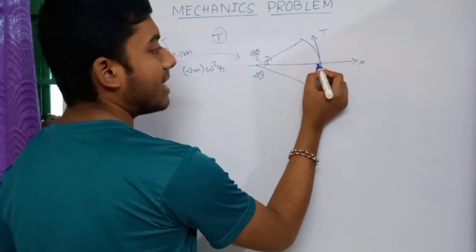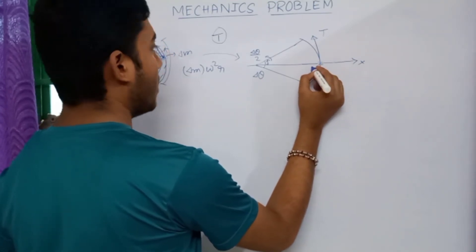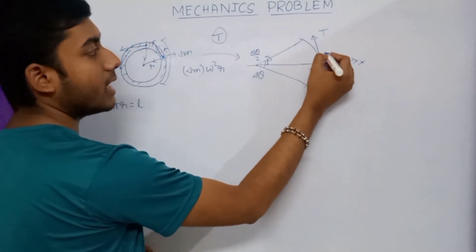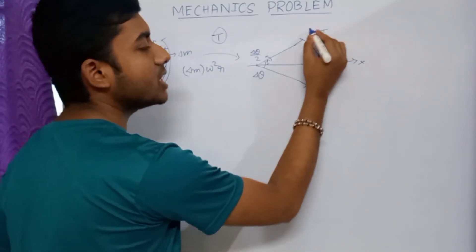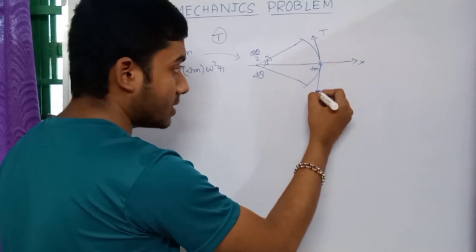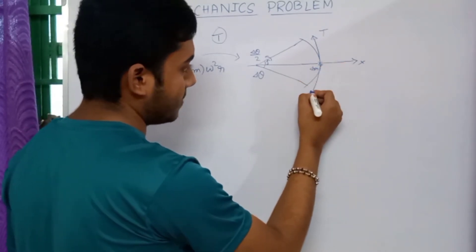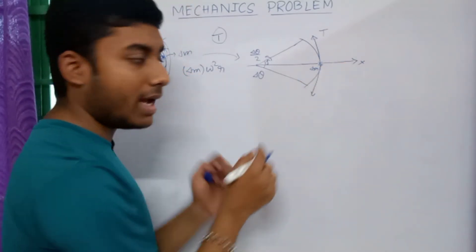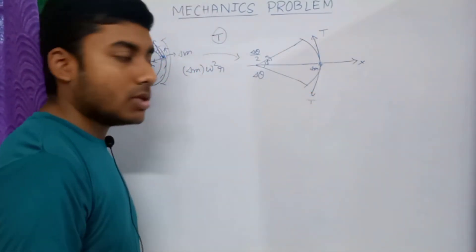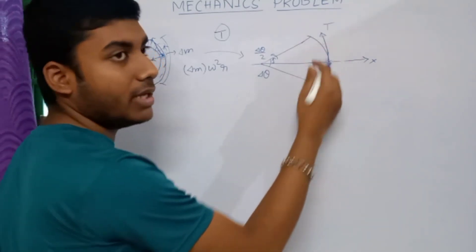For a small mass δm, the tension T is directed tangentially upward on the upper side and tangentially downward on the lower side, each of magnitude T.